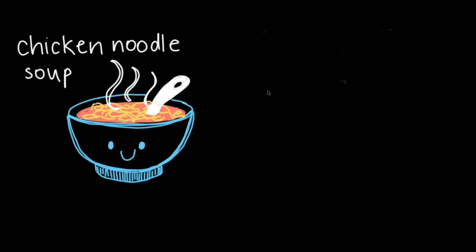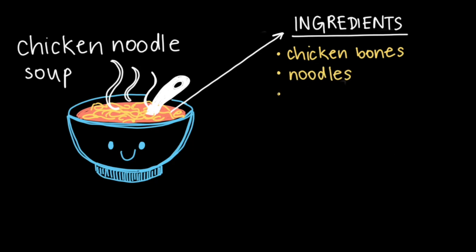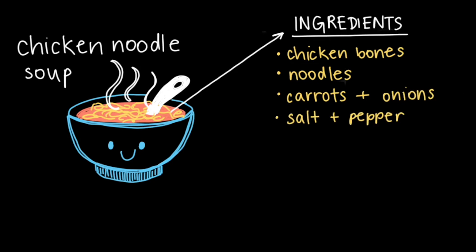Let's imagine this scenario. It's cold outside and we want to make a nice hot bowl of chicken noodle soup. We'd probably need to get the ingredients first: some chicken bones to give the broth that distinct chicken flavor, some noodles to add that starchy component, carrots and onions to give some sweetness and color, and of course salt and pepper to provide seasoning. All of these ingredients would come together to make our chicken noodle soup the comfort food that so many people love.